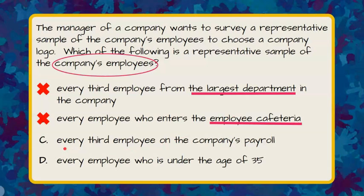Part C says every third employee on the company's payroll. That seems pretty broad — everybody in the company is on the payroll, and they're going to survey every third employee. So there's zero bias; it's just a random sampling. I'm going to keep C as a possibility.